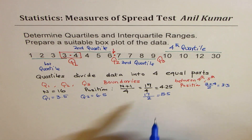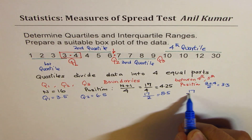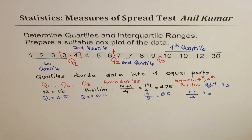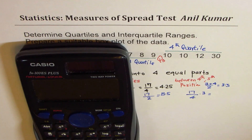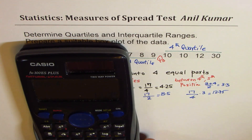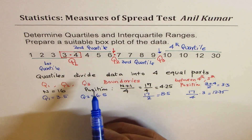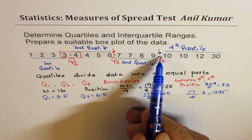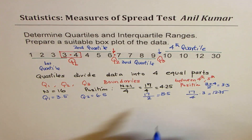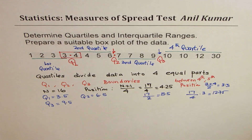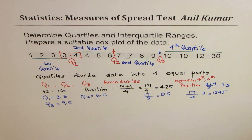For Q3, we do N+1 times 3 over 4. So 17 times 3 divided by 4 gives us 12.75 in decimals — meaning between the 12th and 13th positions. The 12th and 13th values are 9 and 10. So Q3 = 9 plus 10 divided by 2 = 9.5. That is how you get all your values Q1, Q2, Q3 — these are your boundary values.